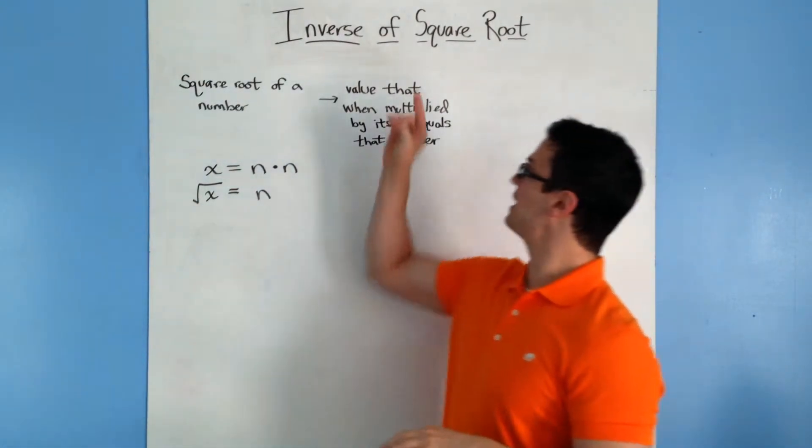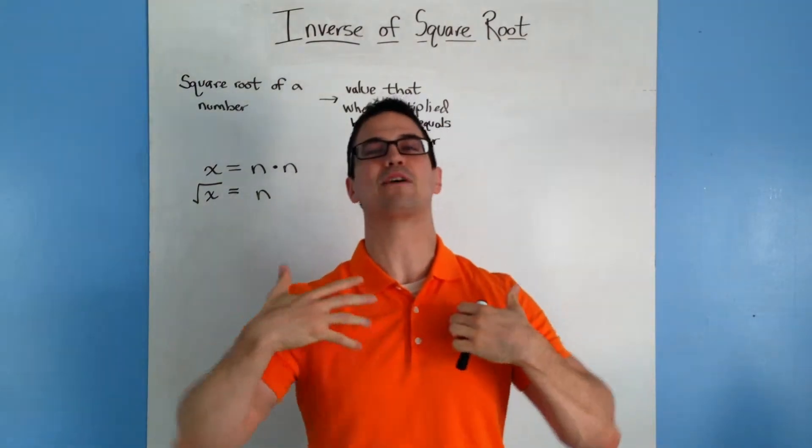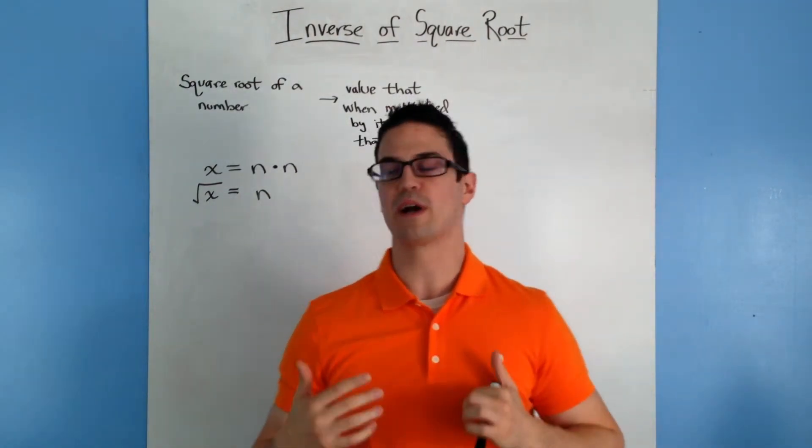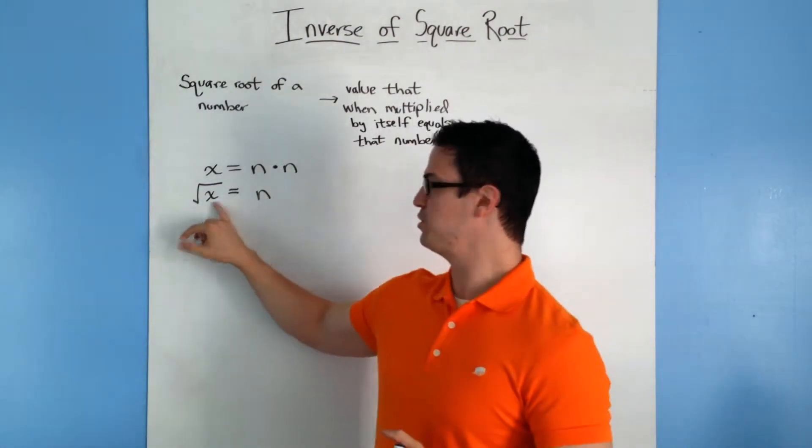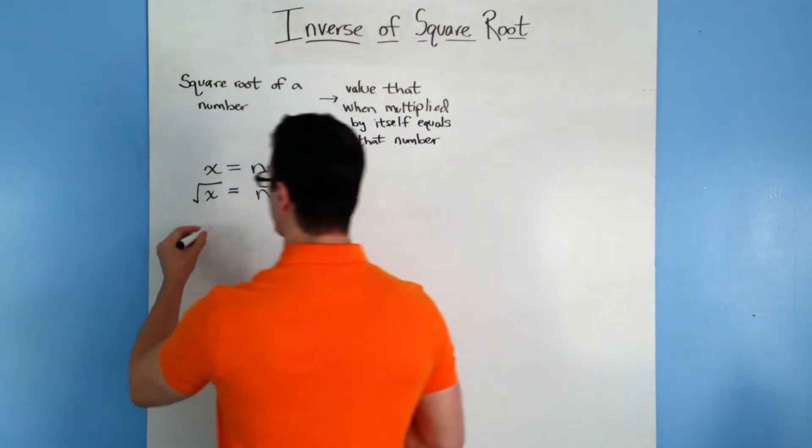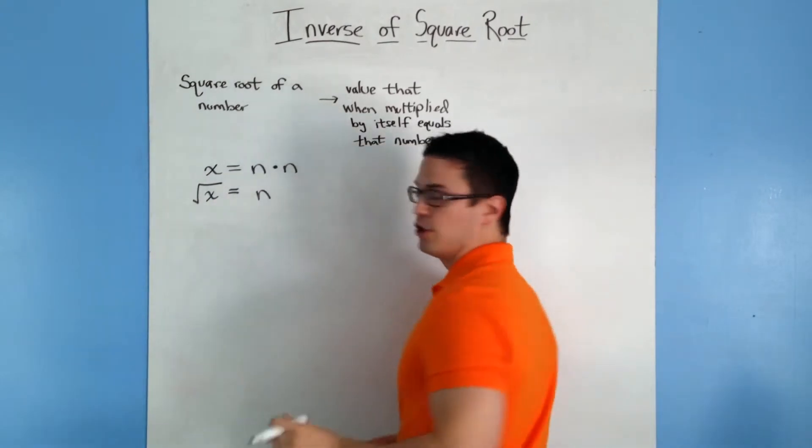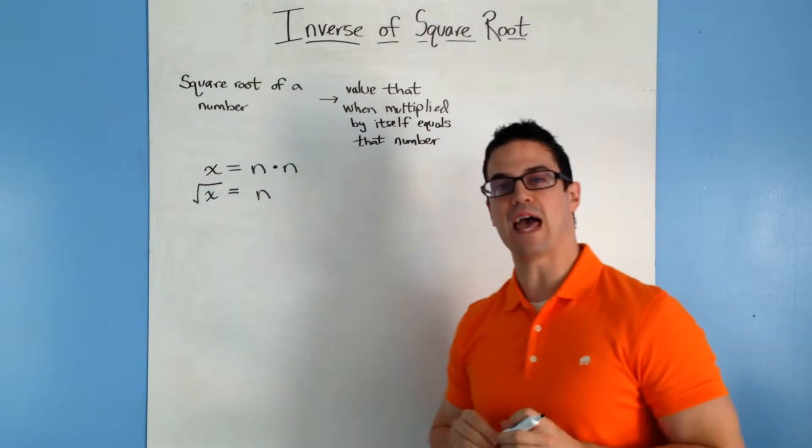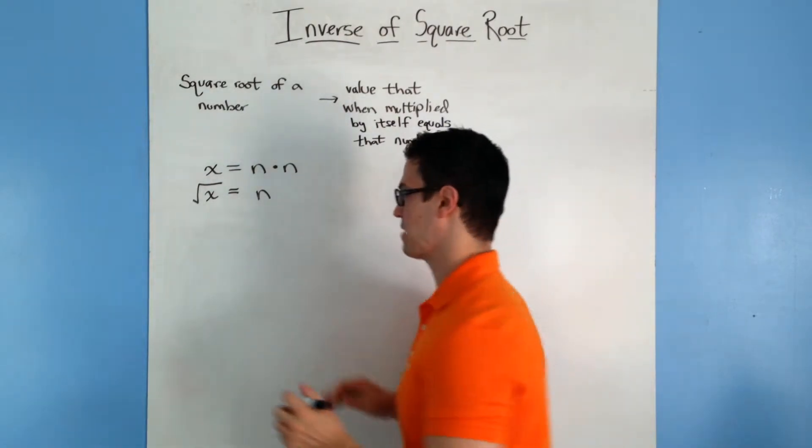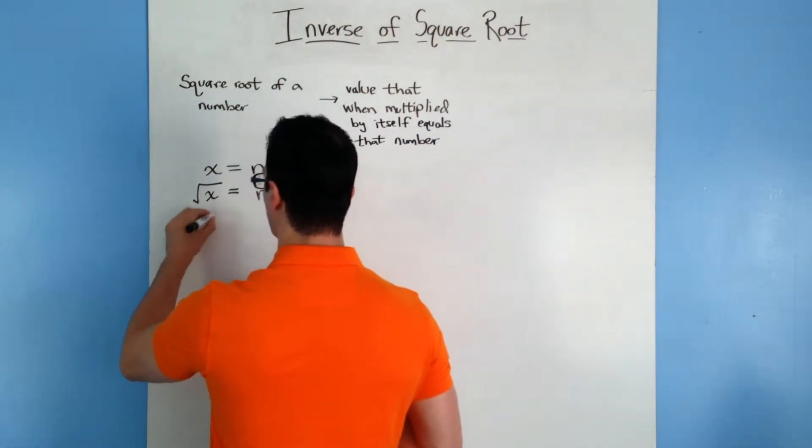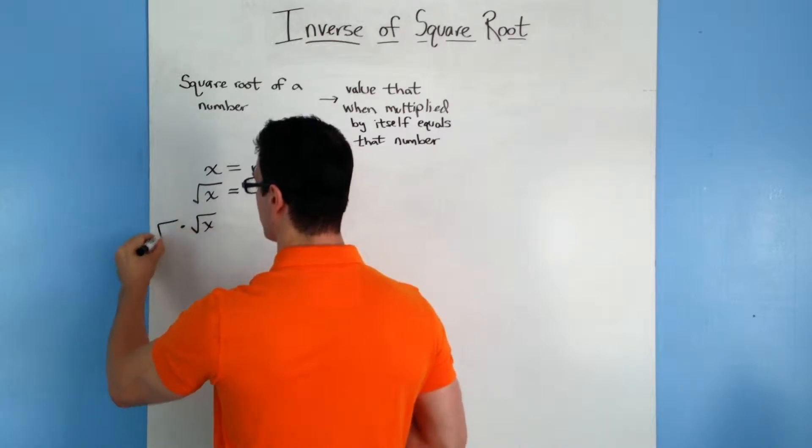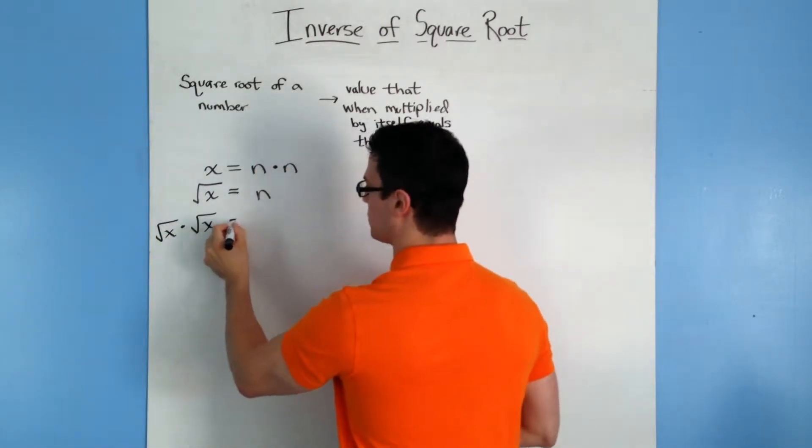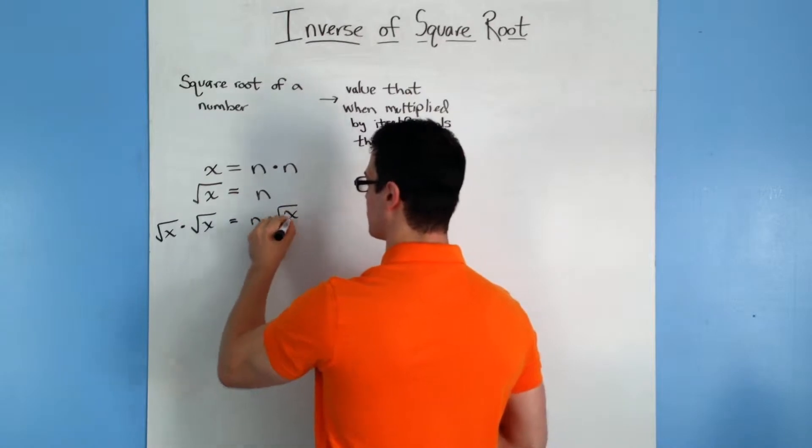So the next thing we're going to do is we're going to show the inverse of square roots, or basically how to get rid of or cancel out the square root symbol right here so that we could just solve for x. So the first thing we're going to do is we're going to multiply both of these sides by the square root of x, because by definition, if you multiply both sides by the square root of x, you will be able to solve for that x. So I'm going to have square root of x times square root of x equals n times the square root of x.